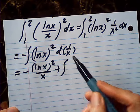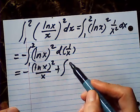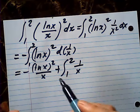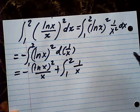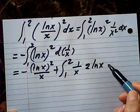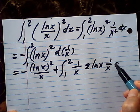Minus becomes plus from 1 to 2, v du. v is this, du is the derivative of this one with respect to x. That will be 2 log x times the derivative of log x, which is 1 over x dx.